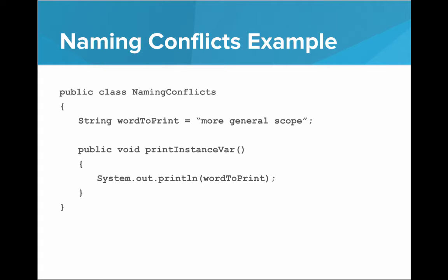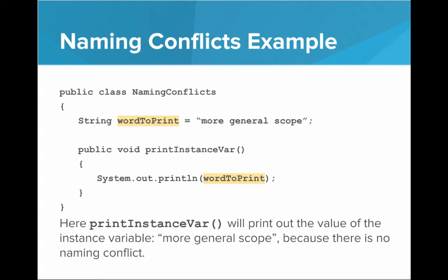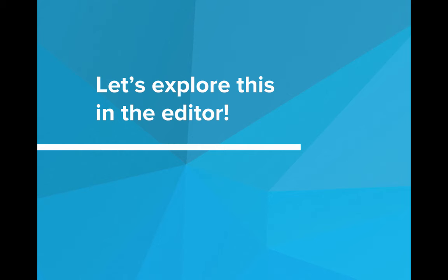Here there is no naming conflict — the only wordToPrint present is the instance variable wordToPrint. So when we run this, if we call printInstanceVar, it will print out the value of the instance variable, "more general scope". Let's see this in the editor.